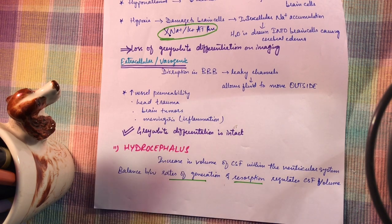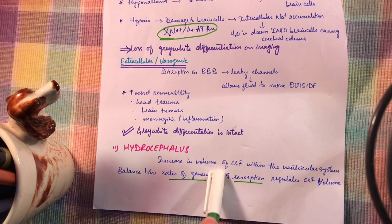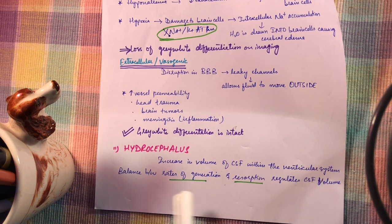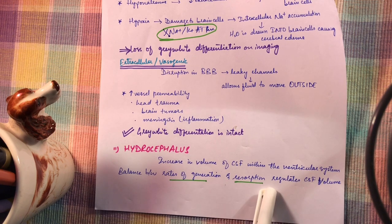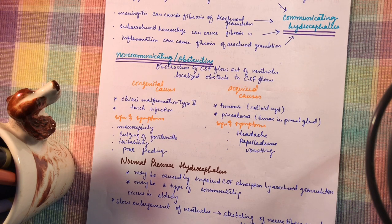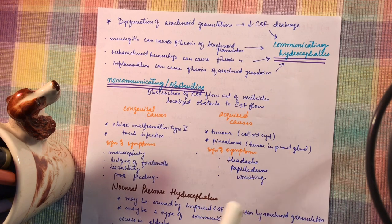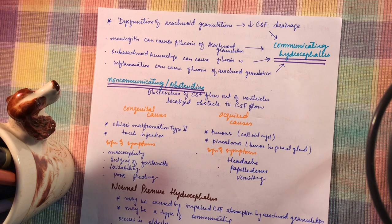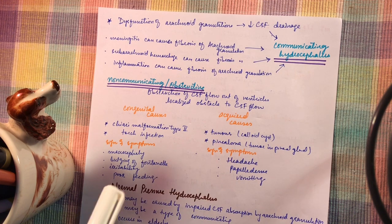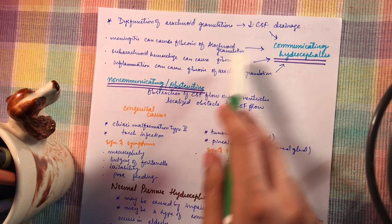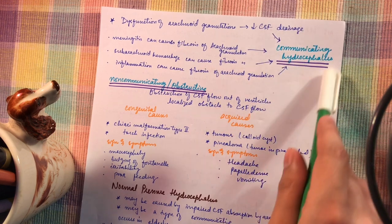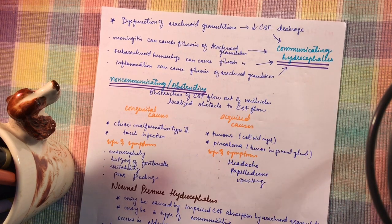Hydrocephalus is an increase in the volume of CSF within the ventricular system. It is the balance between the rates of generation and resorption that regulates CSF volume. There are two types: communicating and non-communicating. Communicating hydrocephalus occurs due to dysfunction of the arachnoid granulations, which leads to decreased CSF drainage — essentially a decrease in CSF resorption.